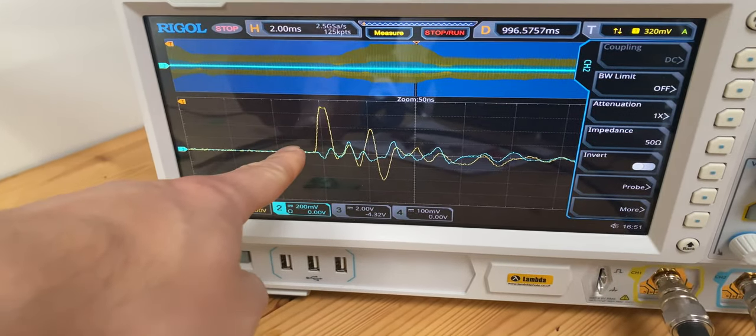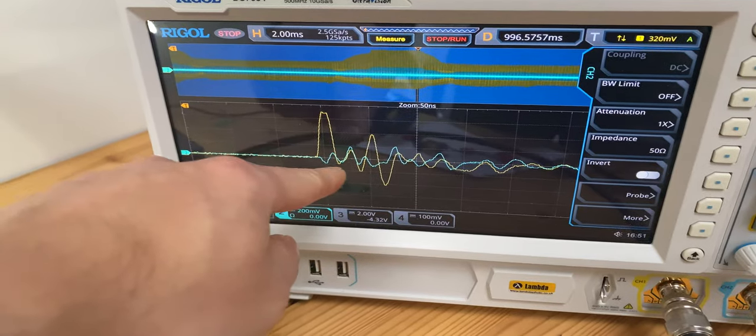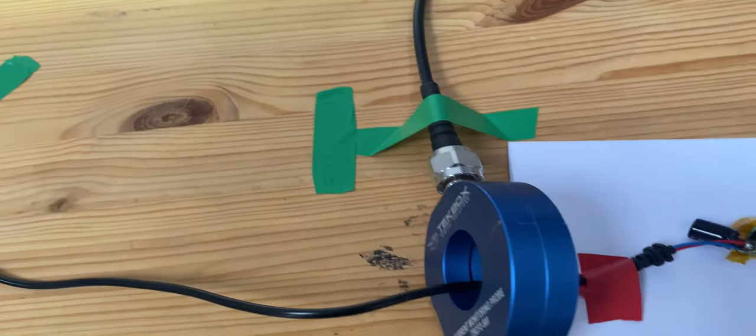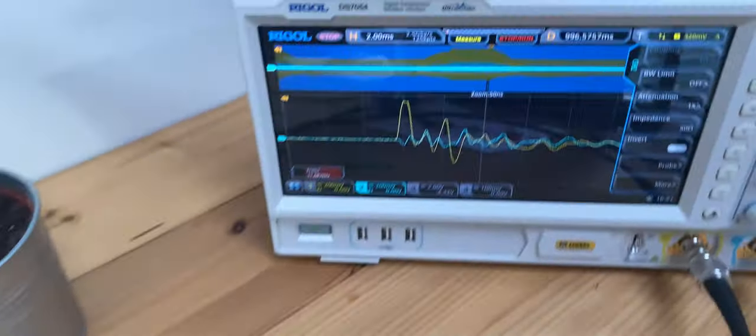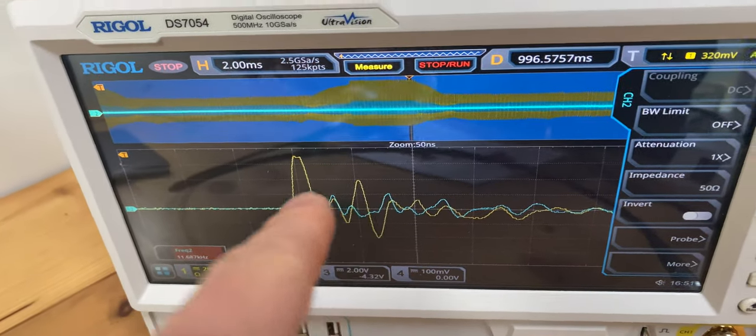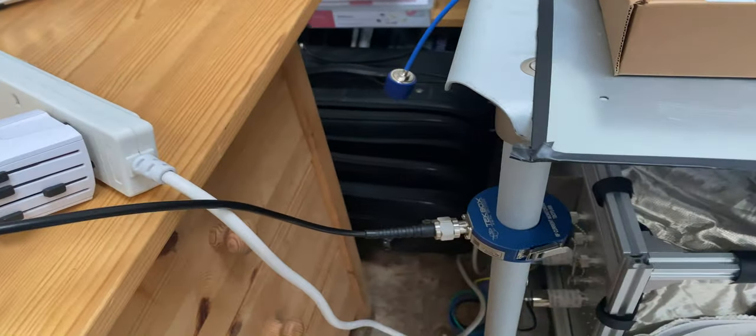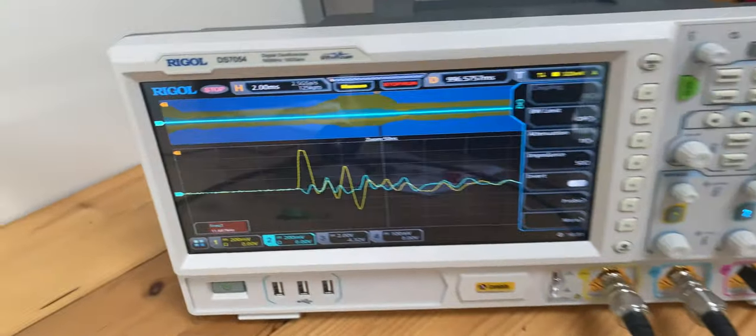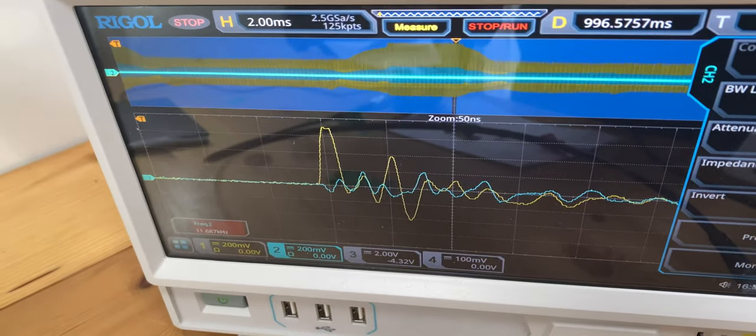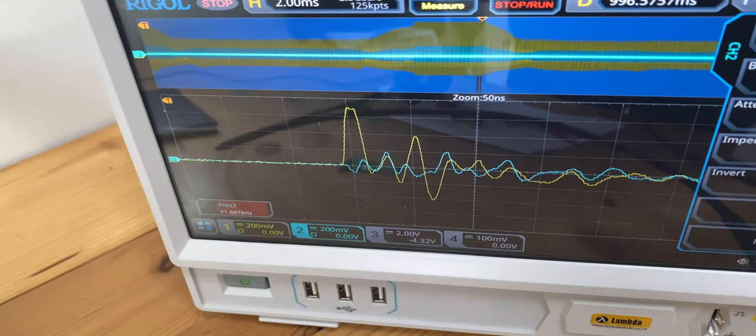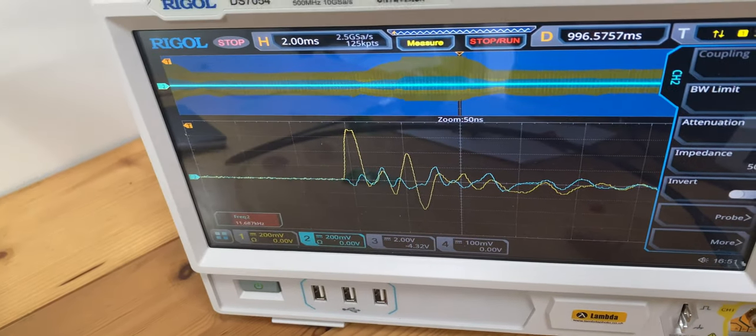As you can see, we have the common mode current in yellow, which is picked up by this RF current probe. And then we have the blue trace, which is picked up by this RF current probe. And as you can see here quite clearly, of course, they will have different amplitudes and also different phase shifts.